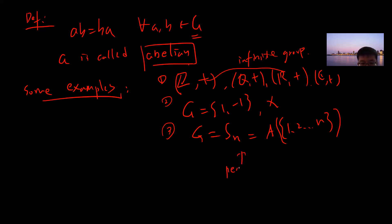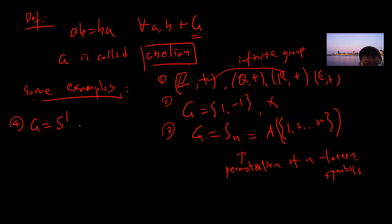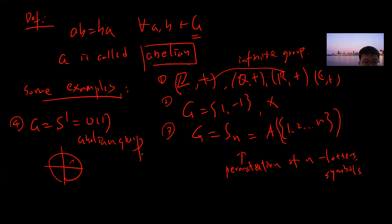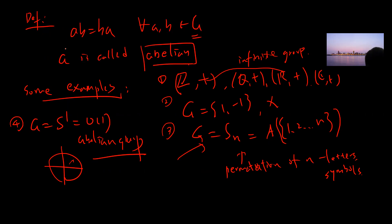We also have G = Sn, which contains all one-to-one maps from {1,...,n} to itself — basically permutations of n symbols. Also G = S1 = U(1), the unit circle under multiplication, is an abelian group. Note that Sn for n ≥ 3 is not abelian.